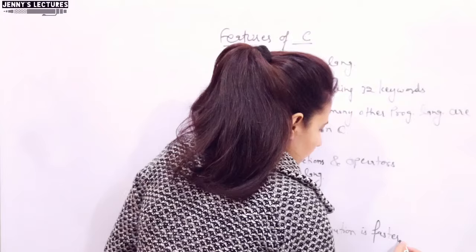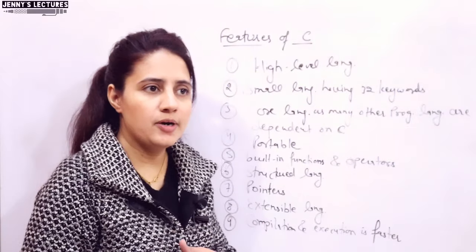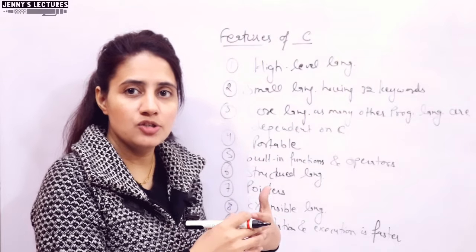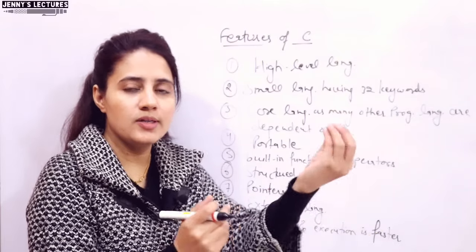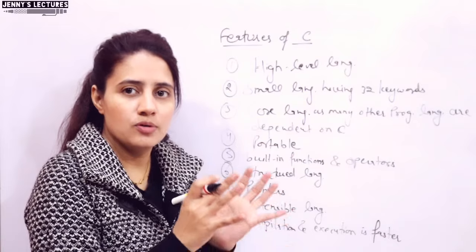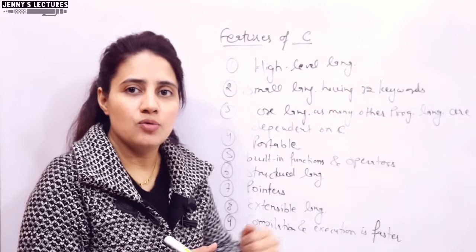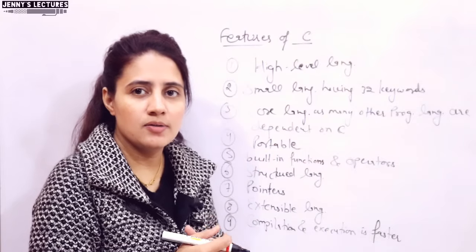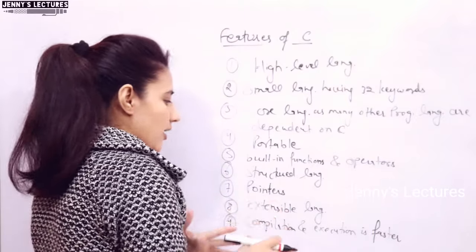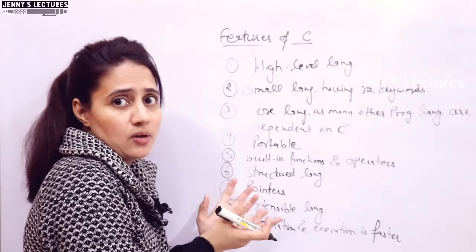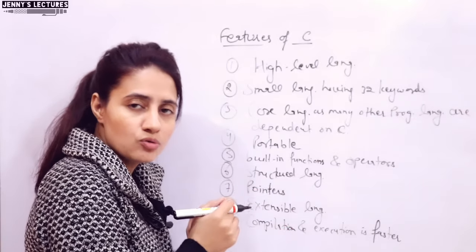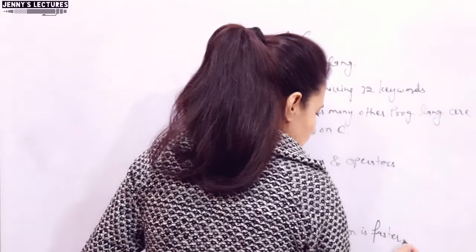The next feature is that compilation and execution of a C program is faster compared to some other languages. As discussed in the previous video, C is a compiled language. After compilation, object code and then an executable file are generated. You can run that executable file, and the execution time of compiled code is very less compared to interpreted code. So compared to interpreted languages, compilation and execution in C is faster. It also has standard built-in libraries, built-in functions, and operators, which contribute to its faster compilation and execution.